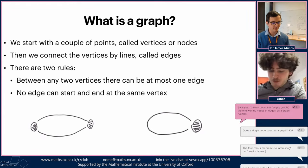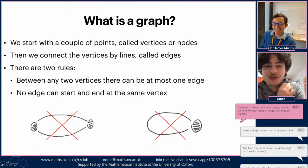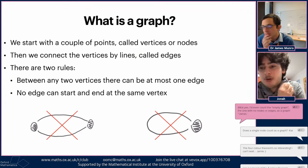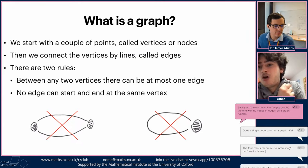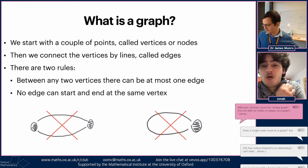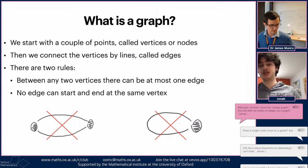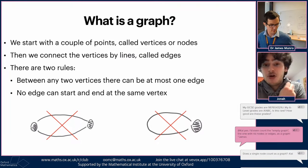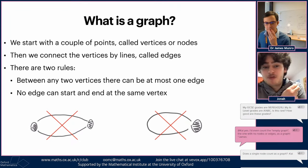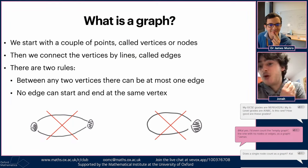There are two rules on how we connect vertices by lines. First rule: between any two vertices, there can be at most one edge - we can't have two edges between the same two vertices. Second rule: no edge can start and end at the same vertex - we can't have a loop. A maximum graph where all possible edges are drawn is called a complete graph, and a graph where no edges are drawn is called an empty graph.